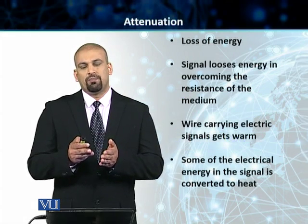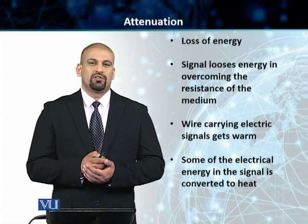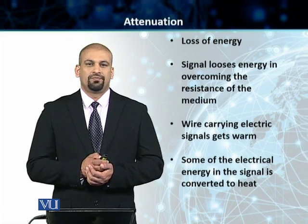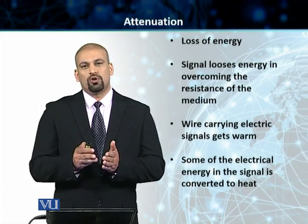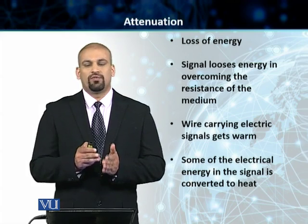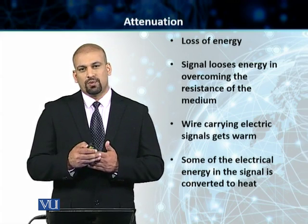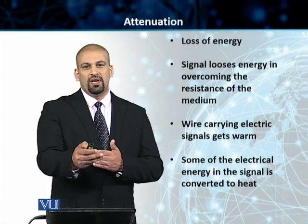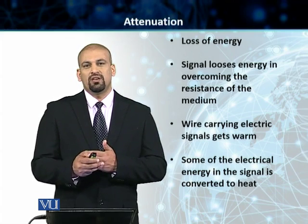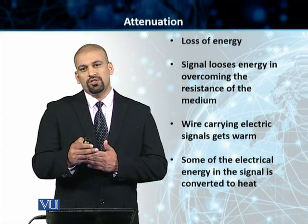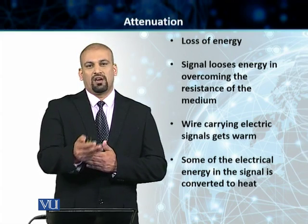We will start the discussion of transmission impairments with the topic of attenuation. Attenuation is nothing but the loss of energy of the signal. When the signal travels from point A to point B, it loses its energy, and therefore in most cases it cannot be recovered.